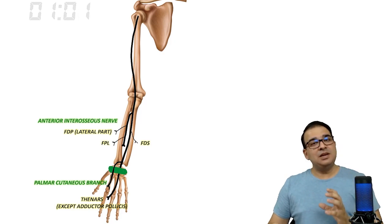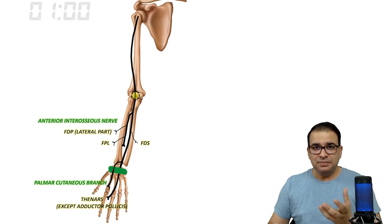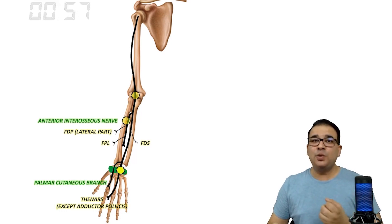Now if we consider the median nerve injury at three possible sites: the higher injury, the lower injury like in carpal tunnel syndrome, and a deeper injury like injury to anterior interosseous nerve.